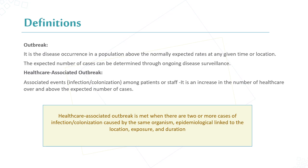The national definition is an associated event — infection or colonization among patients or staff — that has increased in number over and above the expected number of cases. The notification of an outbreak starts from this definition: a healthcare-associated outbreak is met when there are two or more cases of infection or colonization.